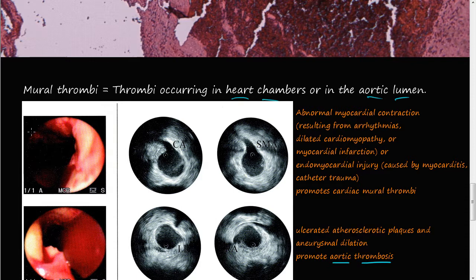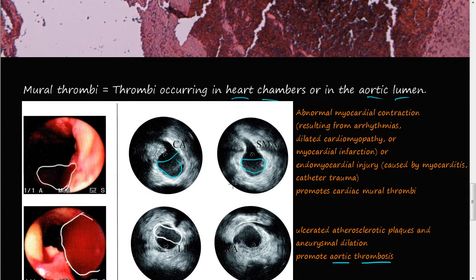In this case, this is the aortic lumen and they are sticking a little scope in there. You can see this little blood clot here. And you can see this blood clot here. This is not a scope, but an ultrasound. You can see the blood clot here, blood clot here, blood clot here, and a blood clot here. So mural thrombi, thrombi that occur in heart chambers or in the aortic lumen.